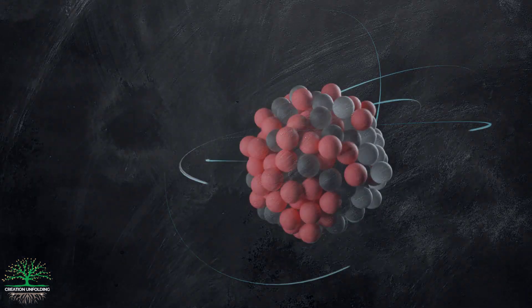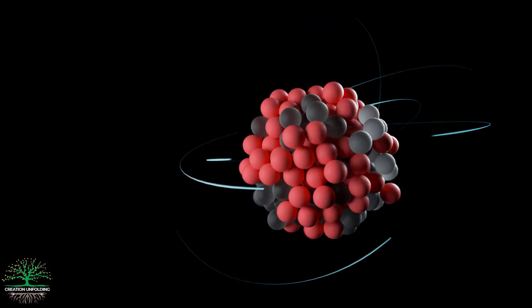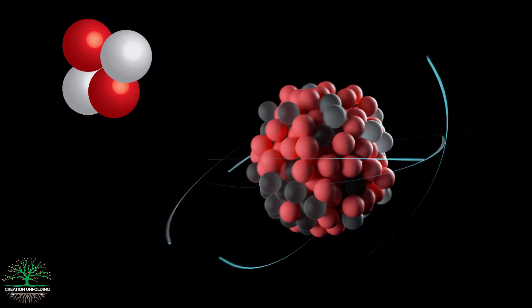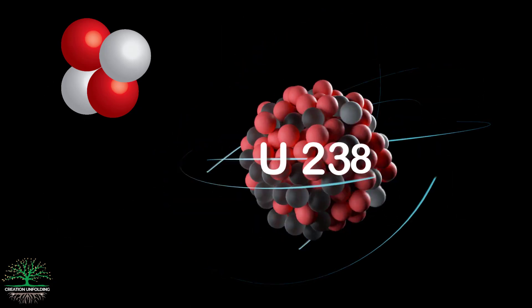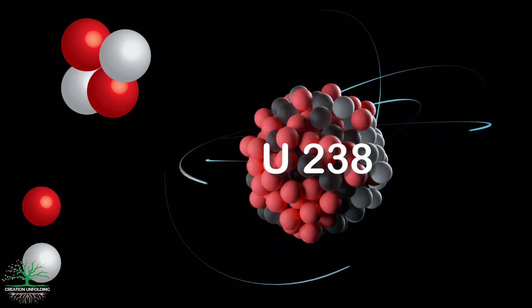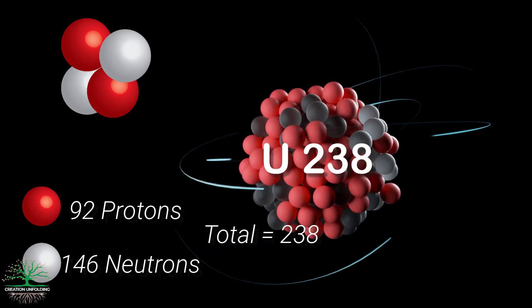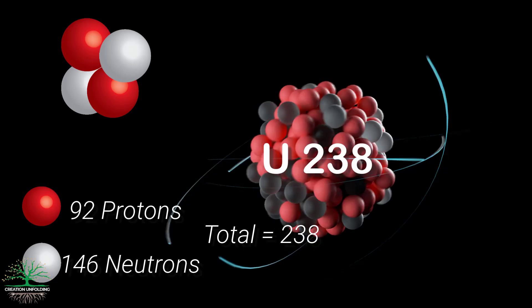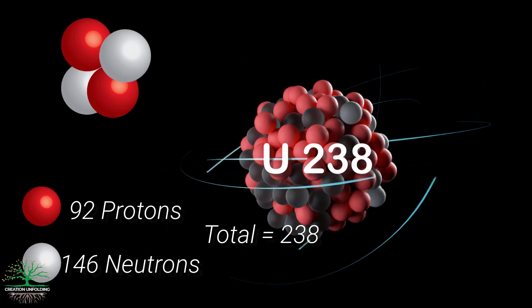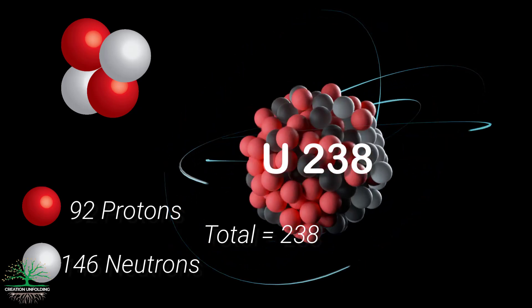Let's have a look at the two most basic ways in which radioisotopes decay. The first kind of decay is called alpha decay. Uranium-238 has 146 neutrons and 92 protons. When you add those numbers together, you end up with 238. This is called uranium-238's atomic mass, and that's why we call it uranium-238.